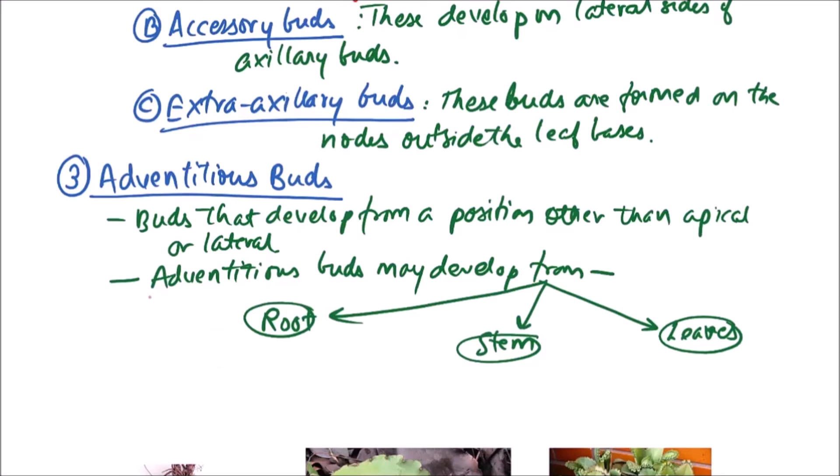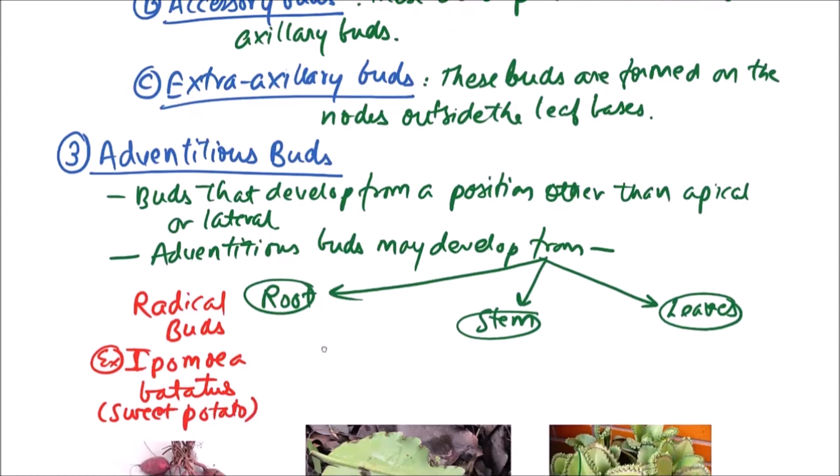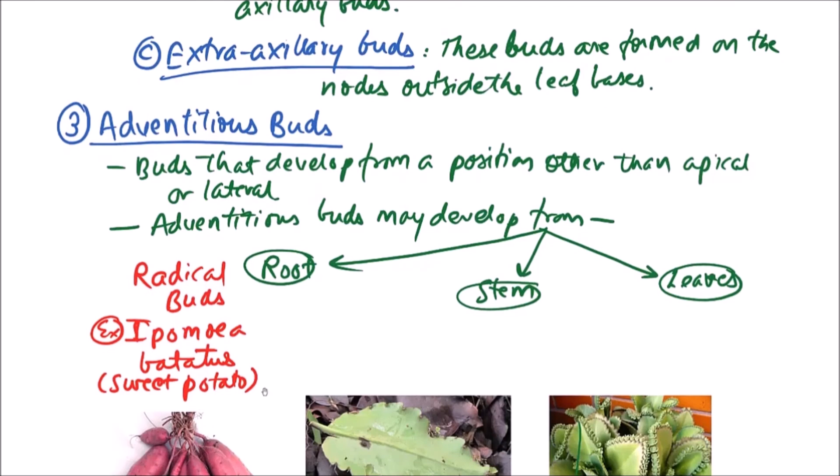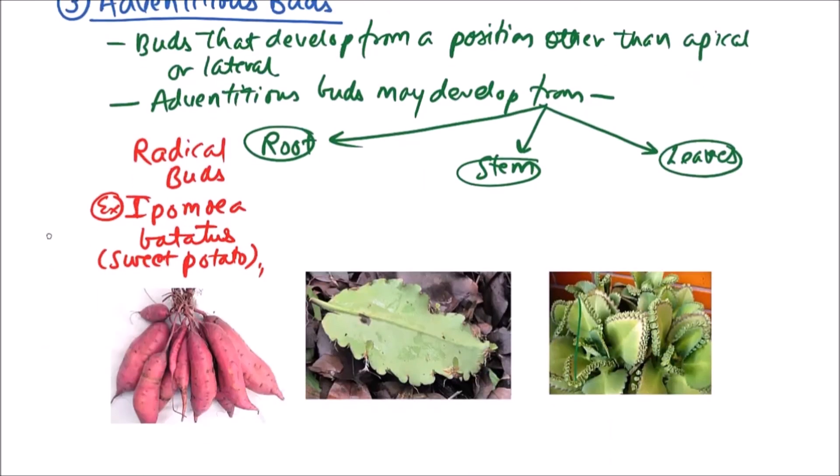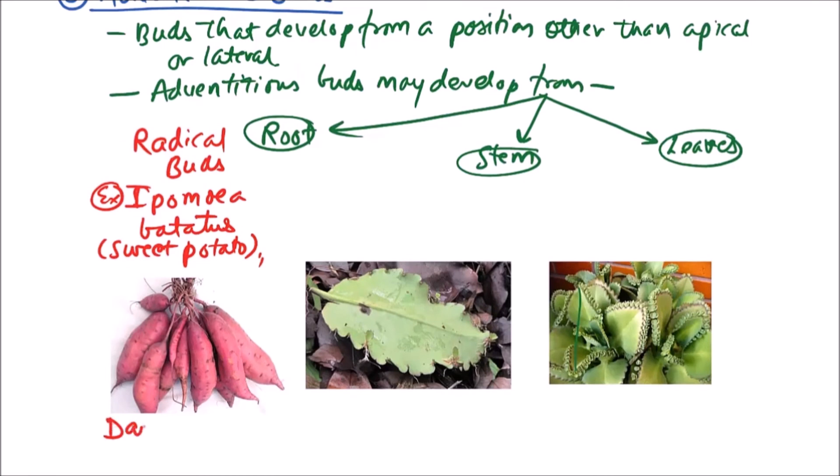Examples of radical buds include Ipomoea potatoes, that is sweet potato. Another example of this category is Dalbergia.